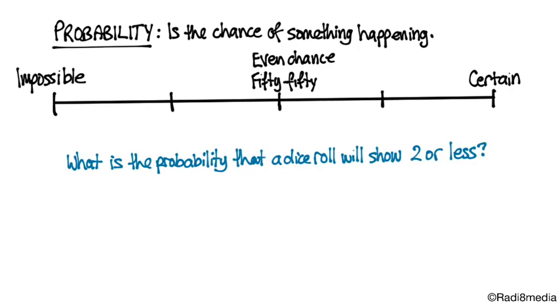The probability that a dice roll will show two or less. Well, there's six numbers on a dice. Two of them only are two or less. So that's less than half the numbers, so I'm going to say that's unlikely to be the case.